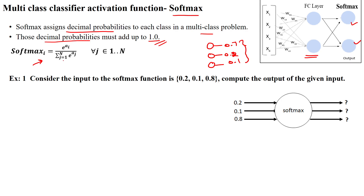Here a1, a2, a_i represent the input values to the softmax classifier. For example, the first input is a1, the second input is a2, and the third input is a3 into the softmax classifier. The denominator is the summation of all inputs into the softmax classifier.